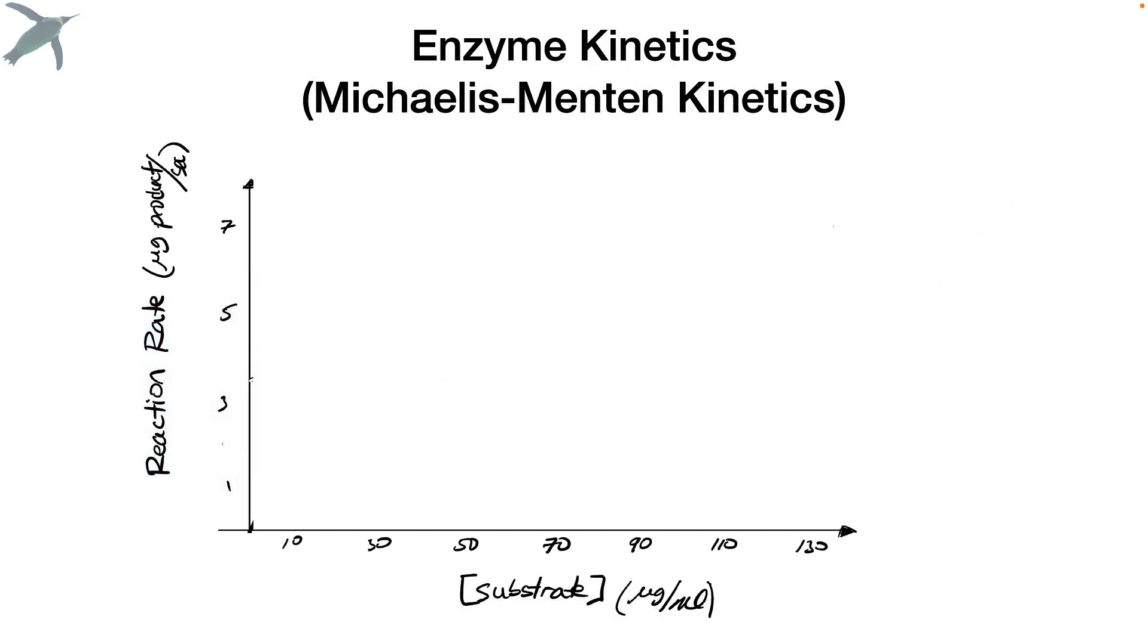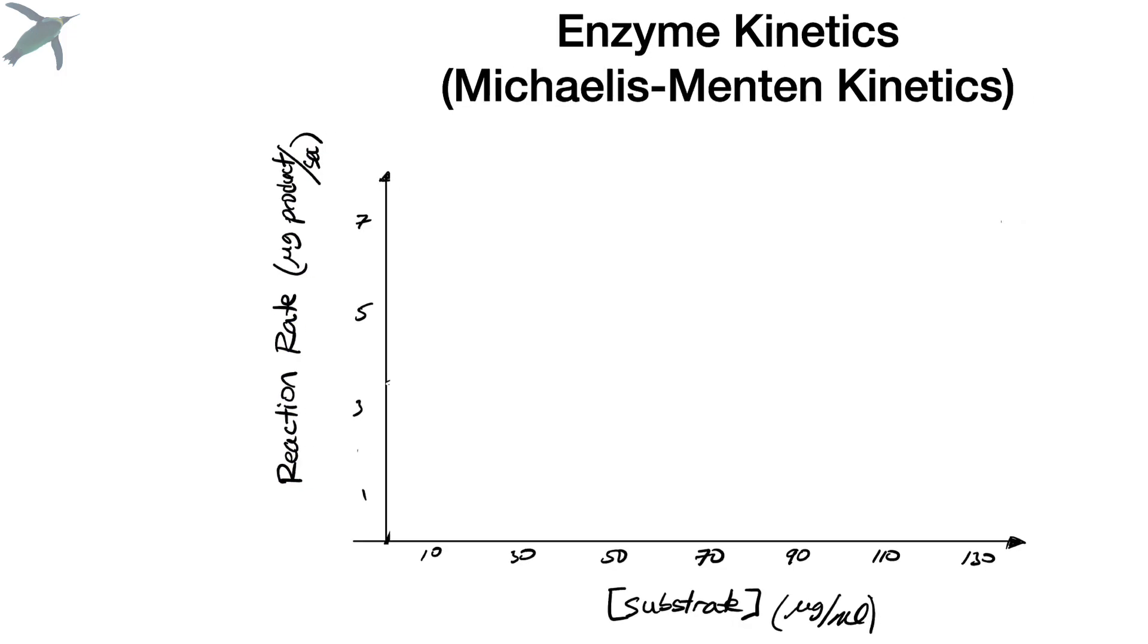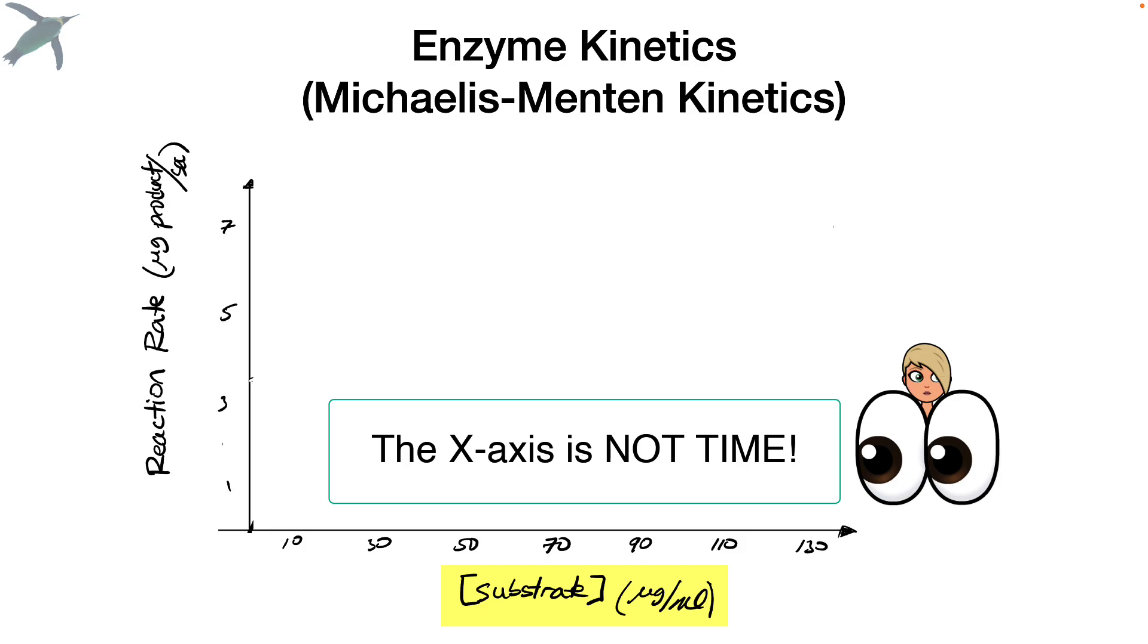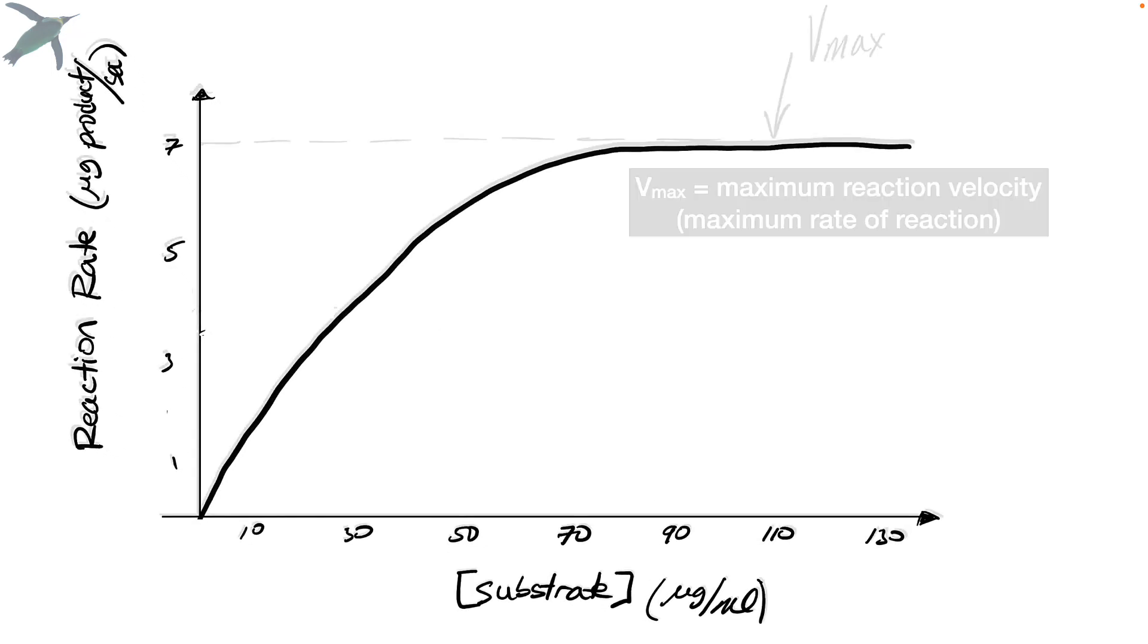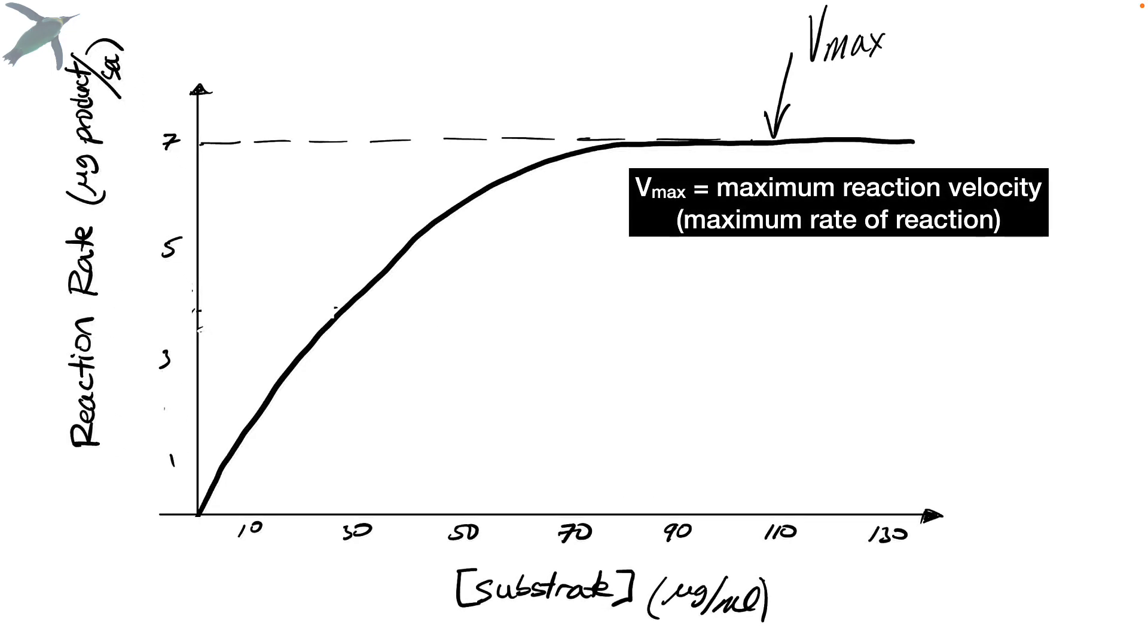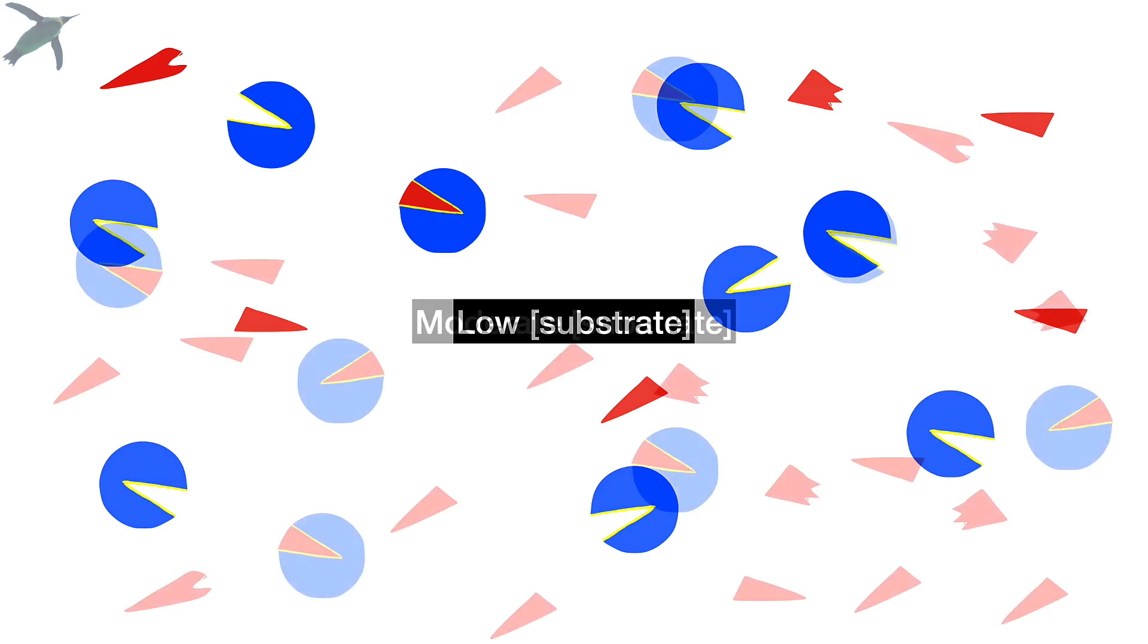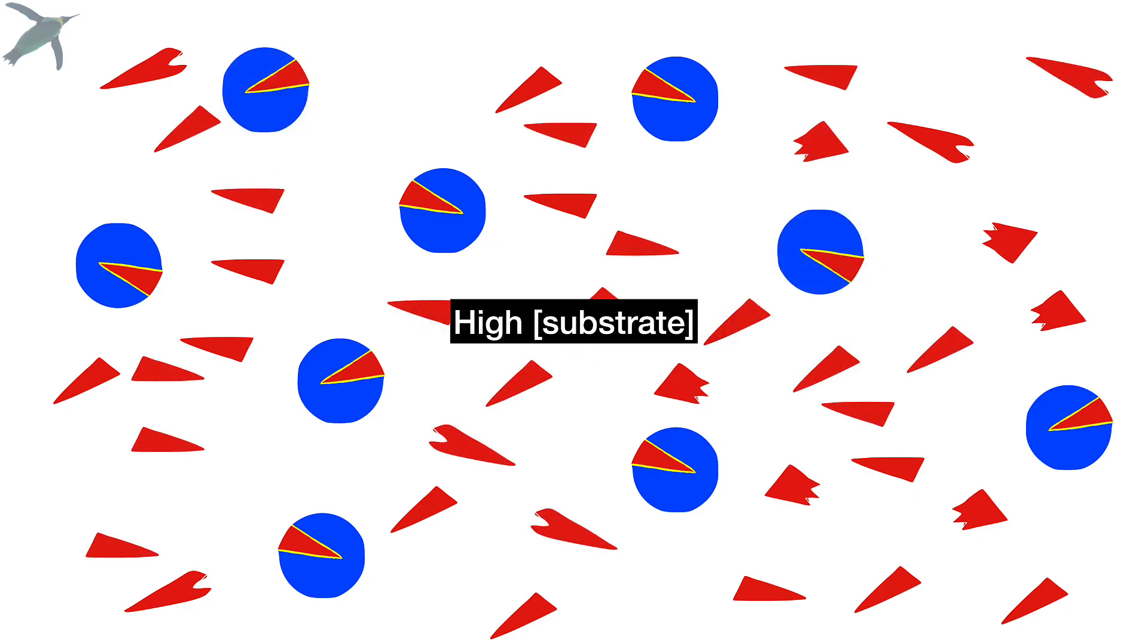All right, here we go. Enzyme kinetics. On the y-axis, we have reaction rate, the amount of product produced per unit time. The X is substrate concentration. It is not time. Going along the X, we're increasing the number of substrate molecules. And this is generally what we see. It's going to saturate. There are two values we're interested in. One is called Vmax. It stands for the maximum reaction velocity. It's the maximum reaction rate, because at some point, the number of enzymes that you have, no matter how many more substrate molecules you add, they're going to be occupied. So it saturates.